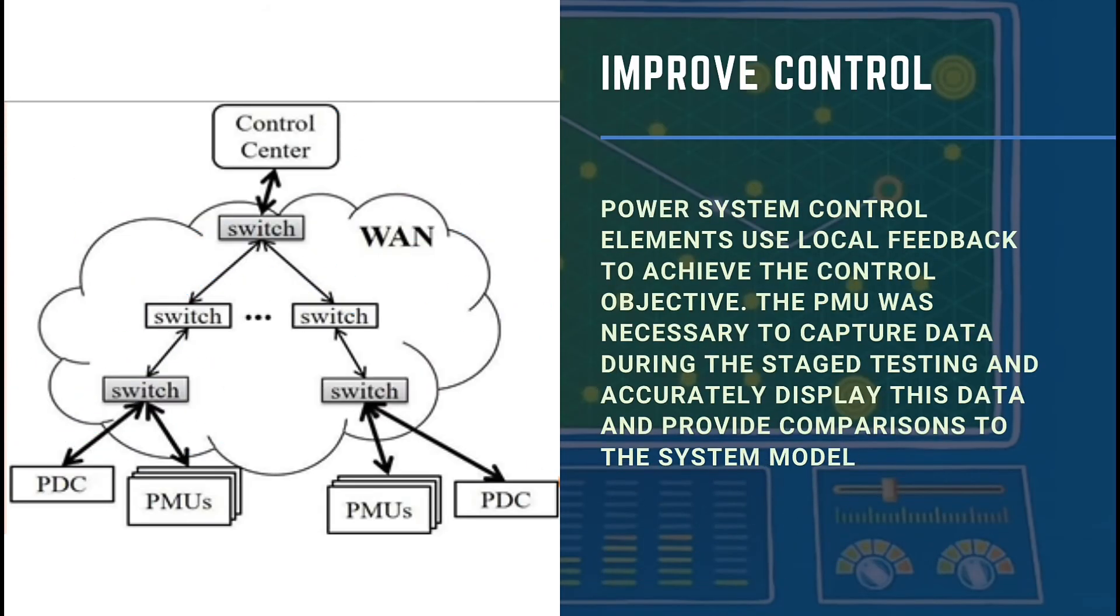Improved control: Power system control elements use local feedback to achieve the control objective. The PMU is necessary to capture data during staged testing and accurately display this data and provide comparisons to the system model. The shown figure shows a typical example of one of the output plots from PMU data.